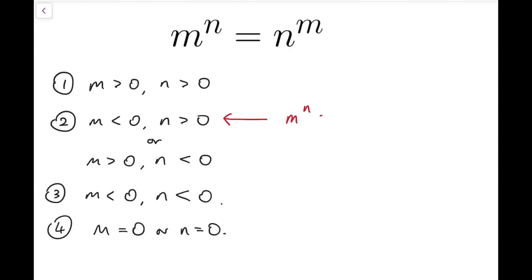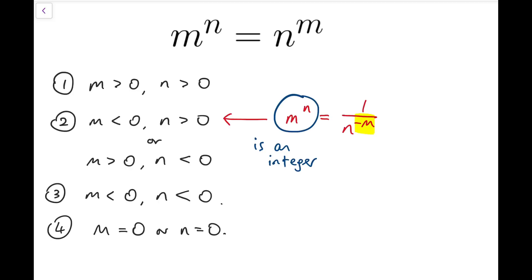Under this subcase, I can say that n to the power n is equal to one over n to the power minus m. The reason I do this is that I want to make sure all the indices are positive. Because m is negative, I move the power of n to the denominator, and so now the index becomes minus m, which is positive. Notice that the left-hand side is an integer, so the right-hand side also has to be an integer, but apparently it's a fraction — so it is at the same time a fraction and an integer.